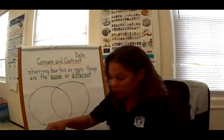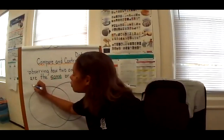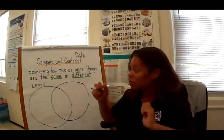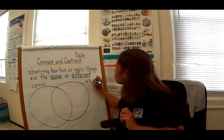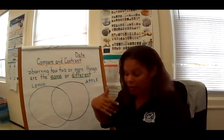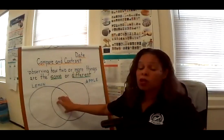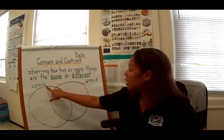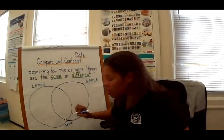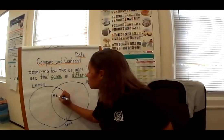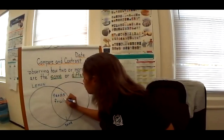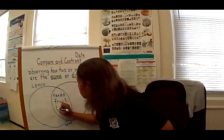This circle over here is going to be the lemon circle, and this circle is going to be the apple circle. In the center space, this is where we're going to write characteristics that are alike — that are the same between the lemon and the apple. So what did we say about them that is the same? We said they both have seeds, they're both fruit, and they're both healthy — good for you.